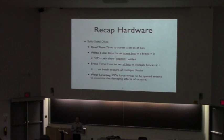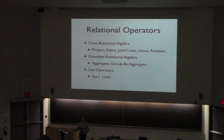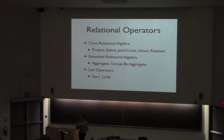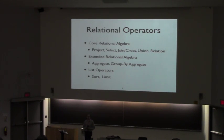Any questions on the hardware recap? We also talked about relational operators as a stand-in for the execution plan you use to evaluate a relational query. The core relational algebra operators we covered were project, select, join, union, and the base relations. We extended that with aggregate and group-by-aggregate operators, and we talked about operators specialized for lists. Relational algebra typically operates on sets or bags, but there are two operators specific to lists: sort and limit.